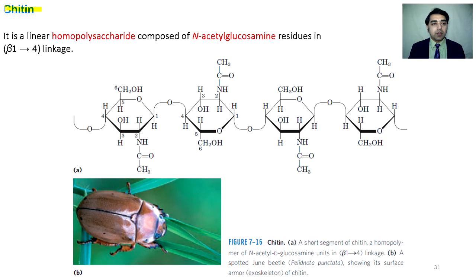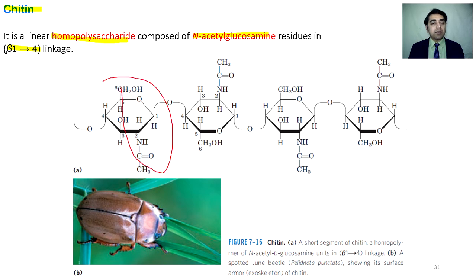Chitin is a component of the exoskeleton of insects. It is a homopolysaccharide of N-acetylglucosamine linked through beta-1,4-glycosidic bonds. Each monomer of N-acetylglucosamine is joined together through the glycosidic bond.